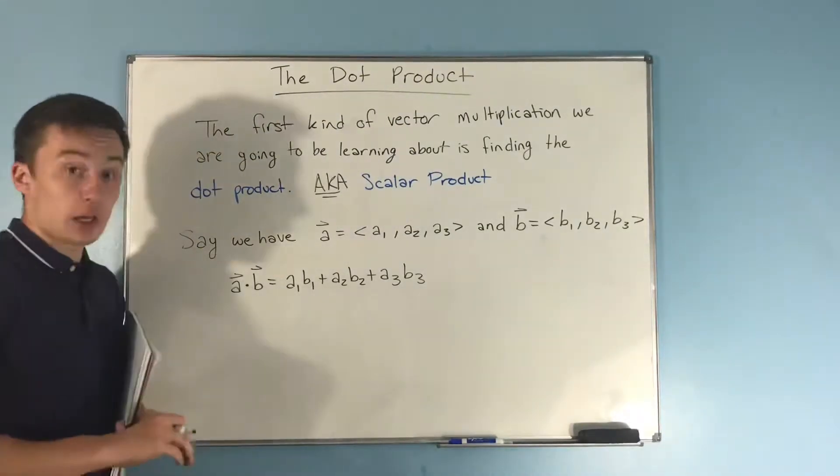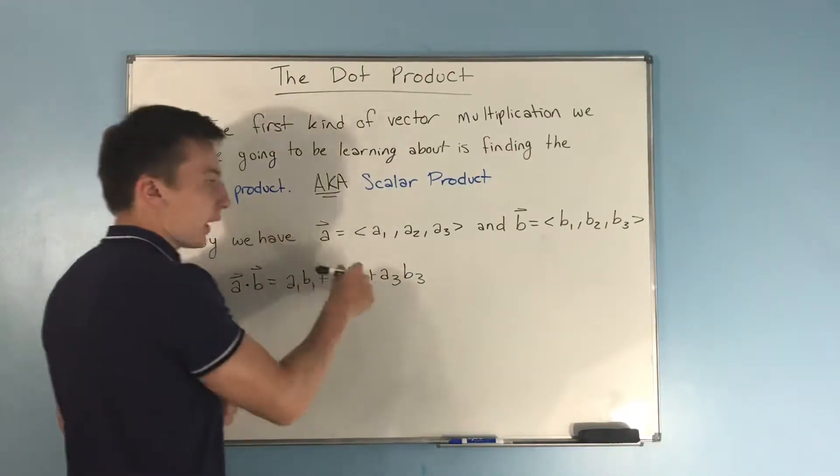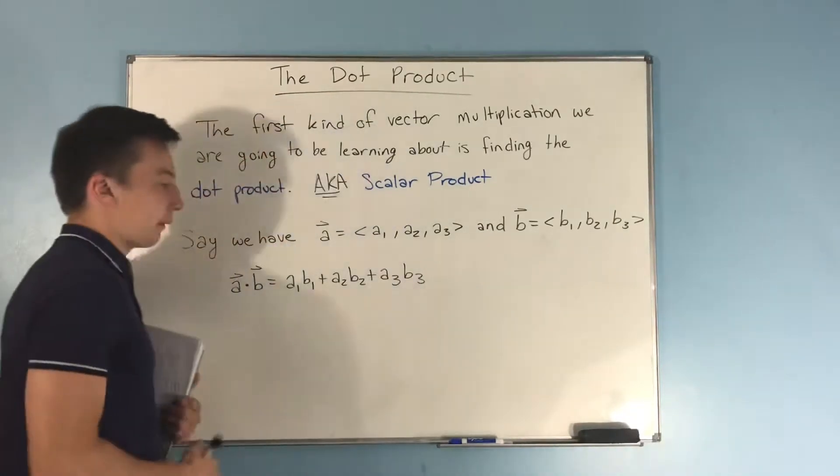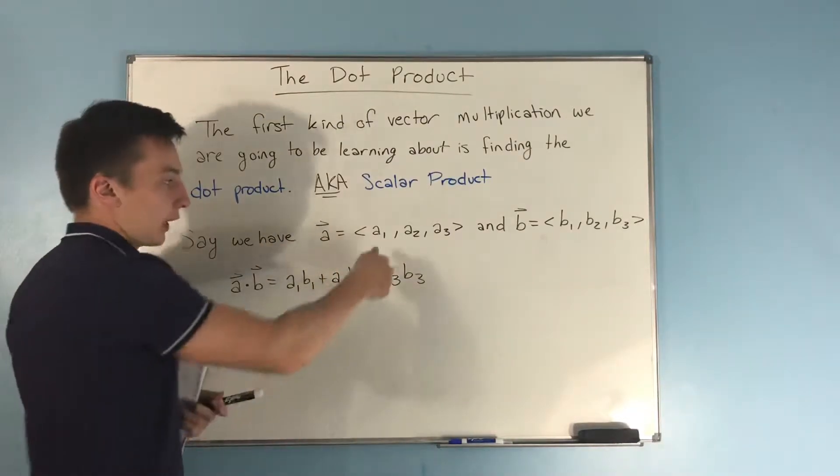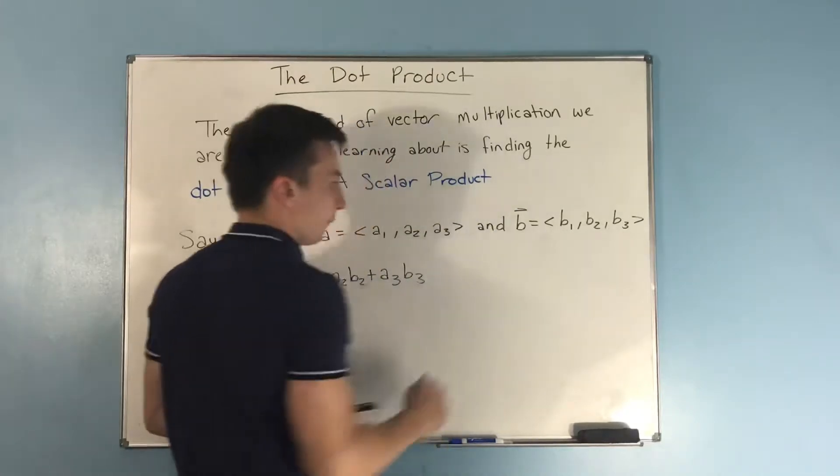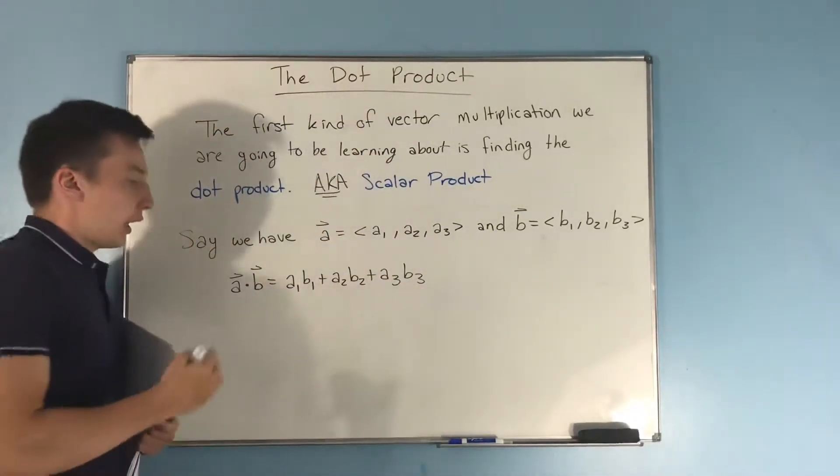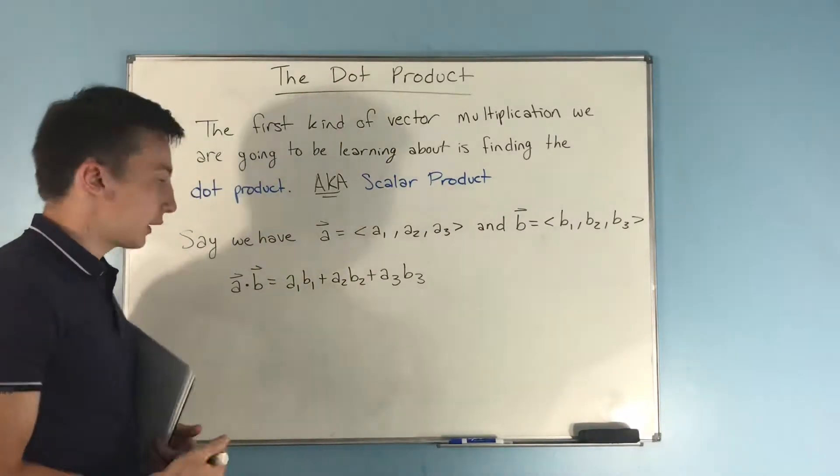Here's how you find the dot product: you have two vectors a and b. Your a vector is a₁, a₂, a₃ and your b vector is b₁, b₂, b₃. So if you want to do a dot b to find your dot product,